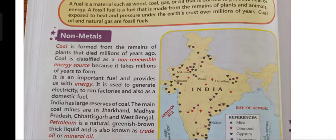So children, first of all, what are non-metals? Things that are not shiny and are not hard like metals are known as non-metals. The examples of non-metals are salt, coal, petroleum and limestone. All these are very common examples of non-metals. Now the first non-metal we are studying is coal.